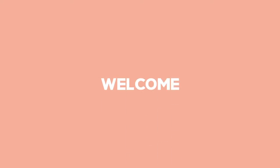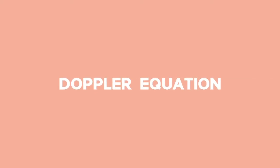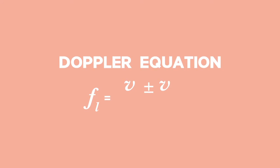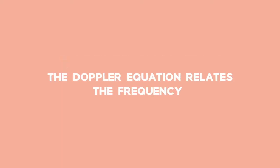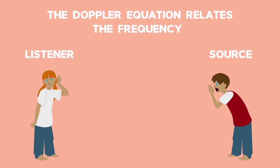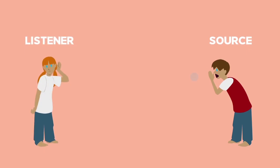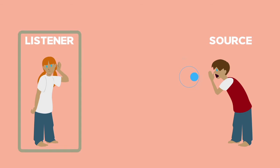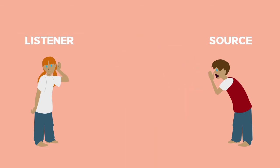Welcome to the lessons about using the Doppler equation. It's a tricky equation that can be simplified if we take a careful look at how it works. The Doppler equation relates to the frequency of a source and a listener, because the frequency experienced by the listener can be changed by moving the two closer or further apart — so we need to look at their velocities.